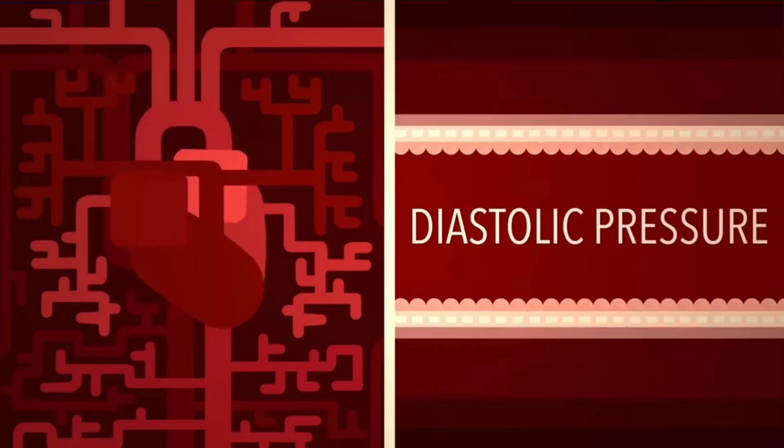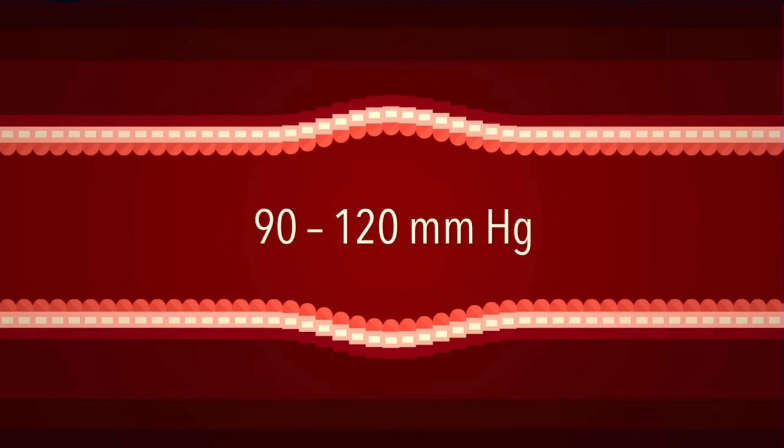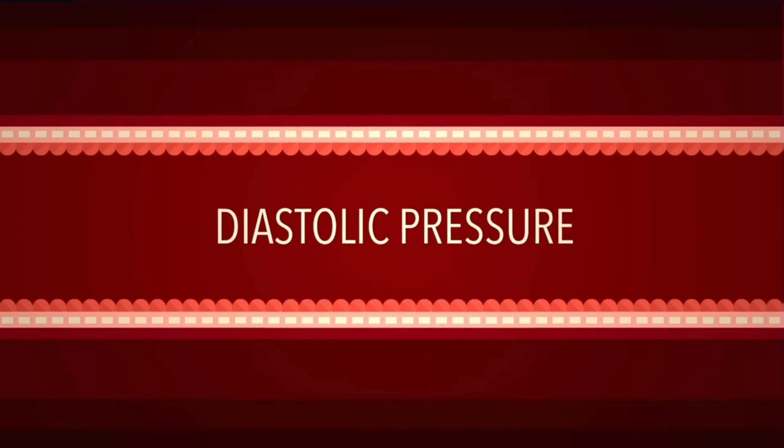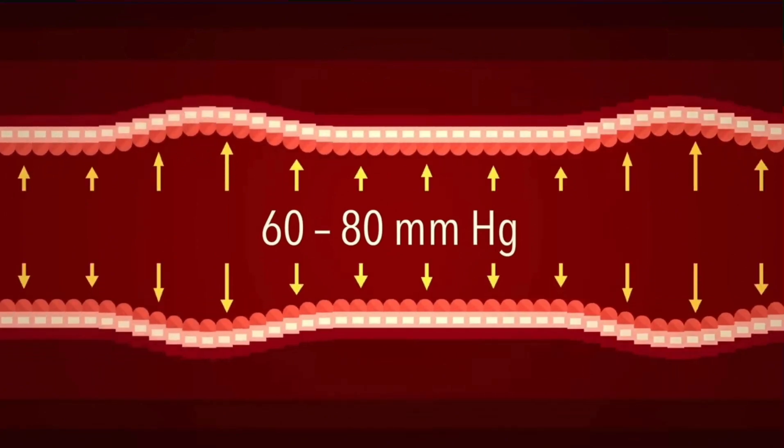The heart's relaxation phase is called diastole. In a healthy patient, systolic pressure typically falls within the range of 90 to 120, while diastolic pressure ranges between 60 to 80. This number is lower because it's when the heart is relaxed.